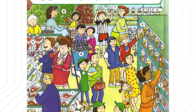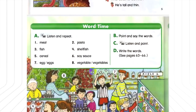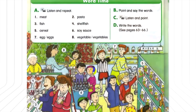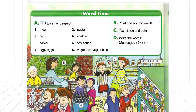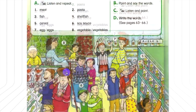Now, listen and point to the speakers. What's wrong? I can't find my pencil. What does it look like? It's red and yellow. What are these? They're carrots. Excuse me, where's the cereal? It's in aisle 1. It's next to the pasta.